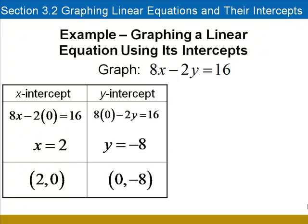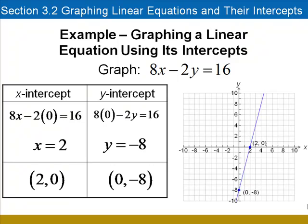To graph the line, we'll put the x-intercept at 2 on the x-axis and the y-intercept at negative 8 on the y-axis and draw the straight line that passes through those two points.